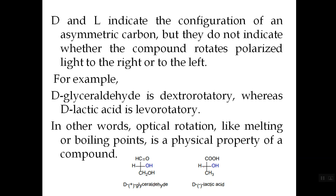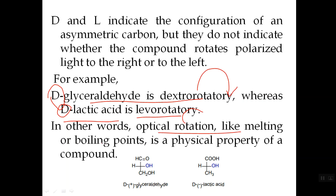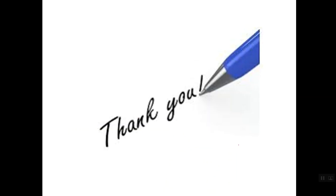D and L tell you only the configuration — the functional group position on the asymmetric carbon atom. For example, D-glyceraldehyde, which has the OH towards the right side, is dextrorotatory. Similarly, D-lactic acid, which also has the OH towards the right side, is levorotatory — meaning it rotates plane-polarized light towards the left side. Optical rotation, like melting point or boiling point, is a physical property of a compound.